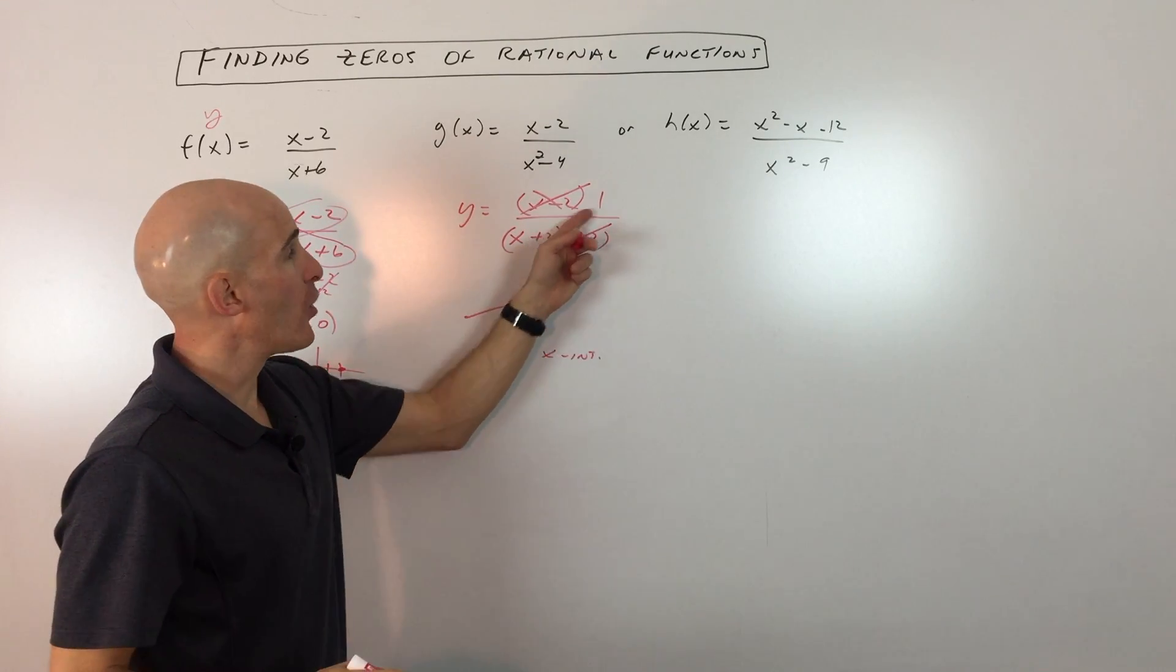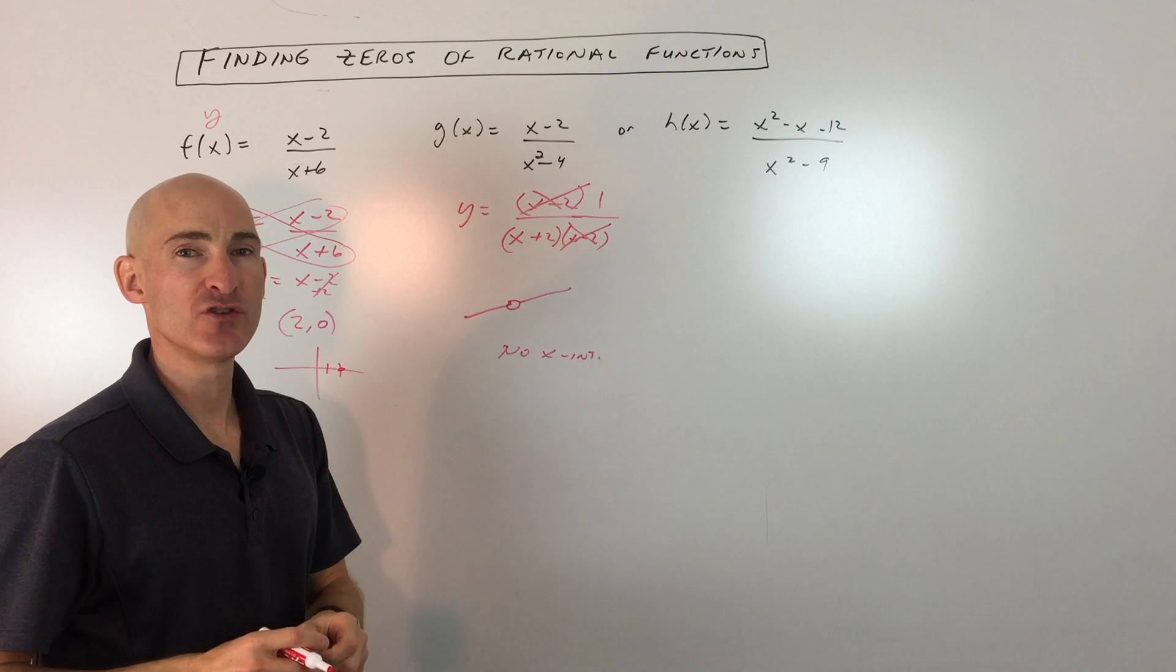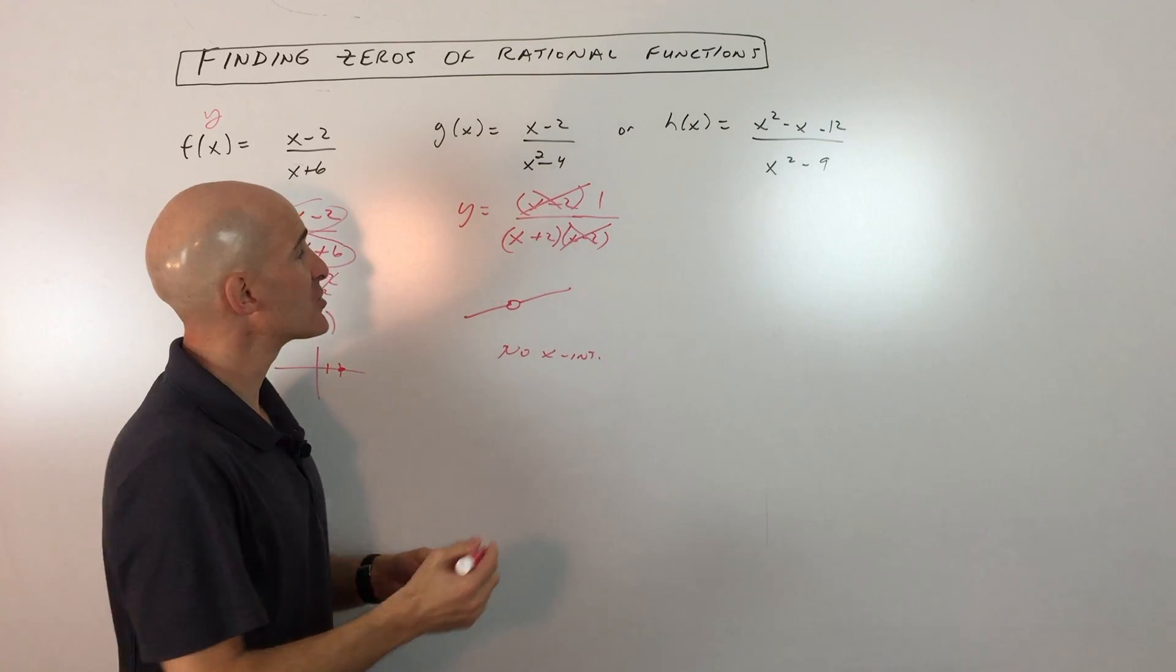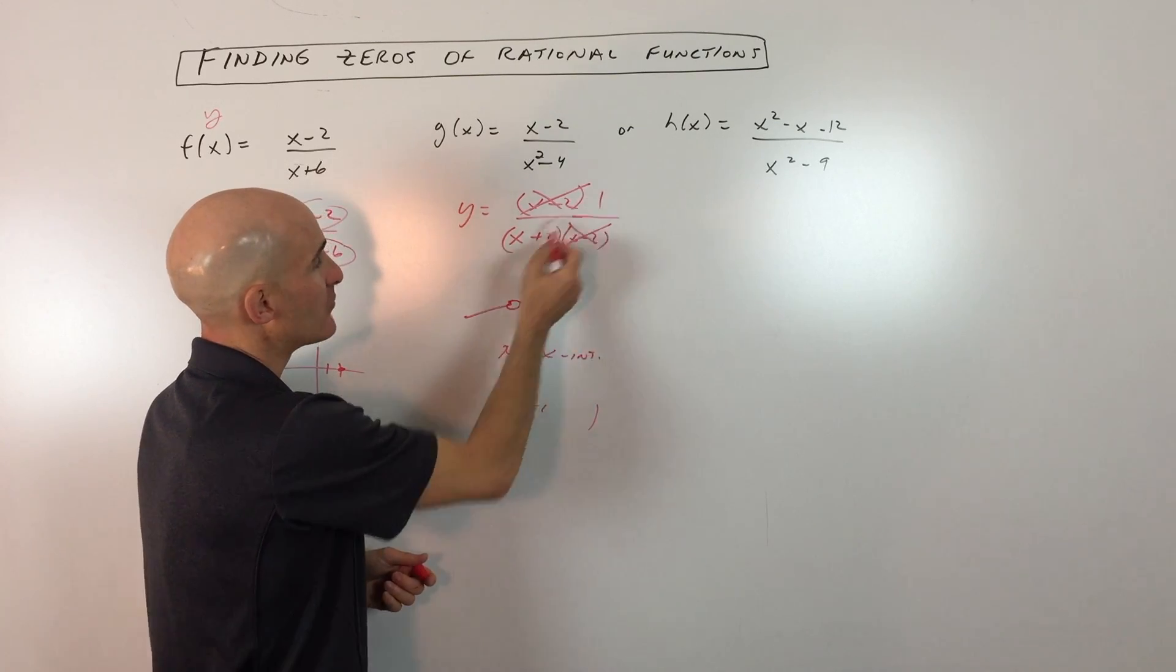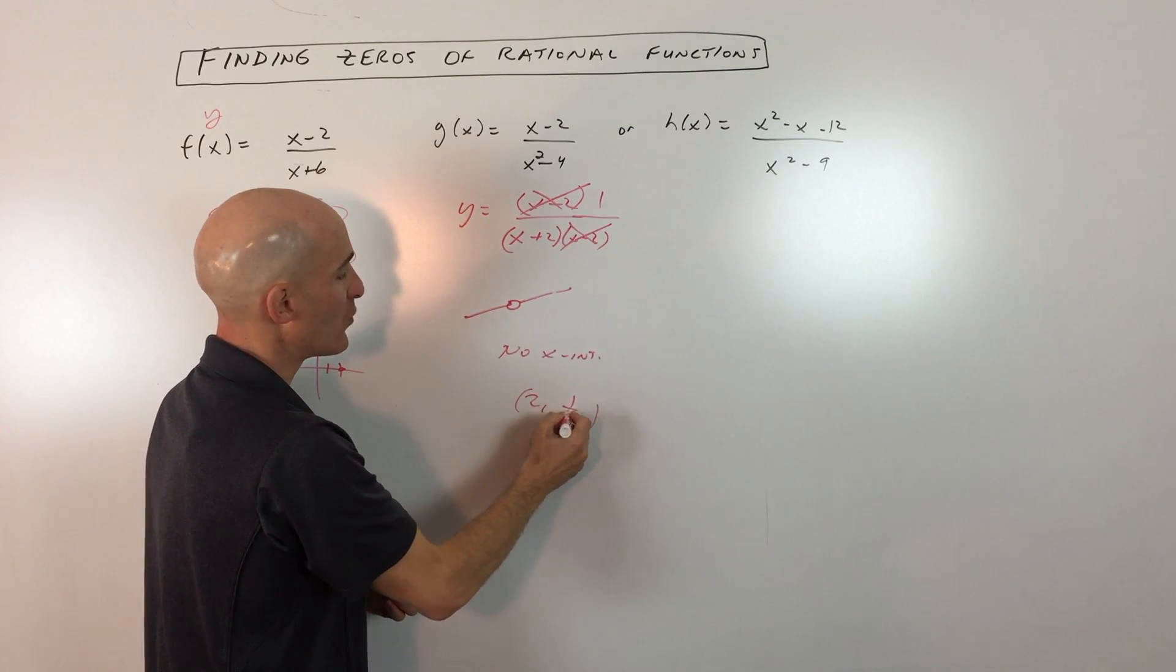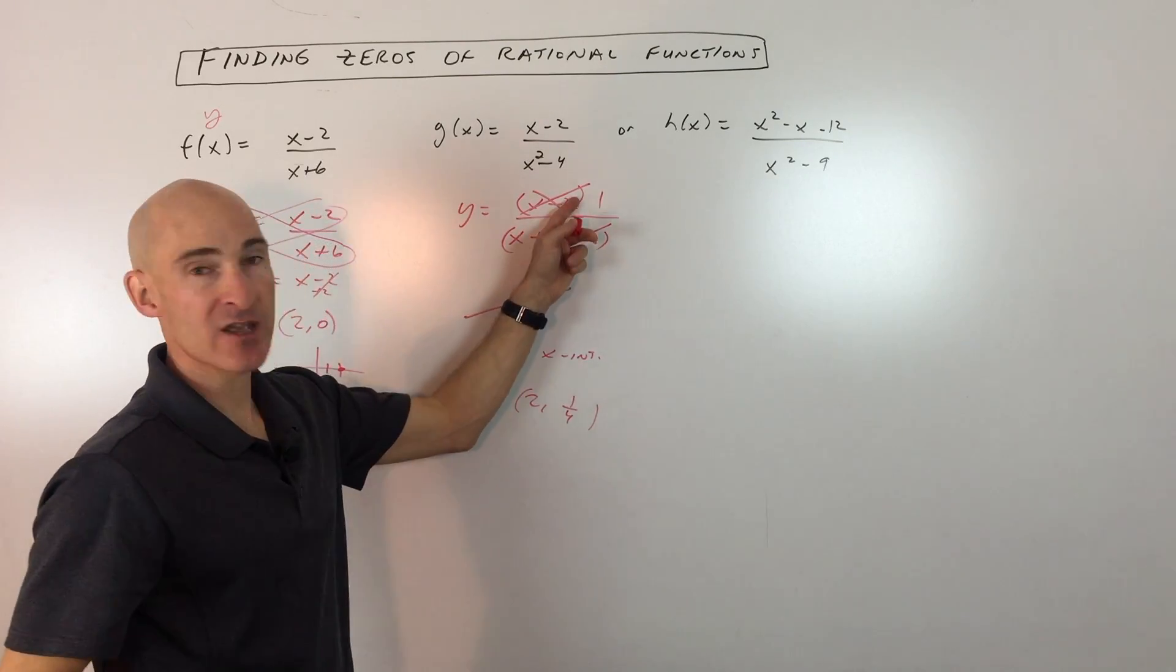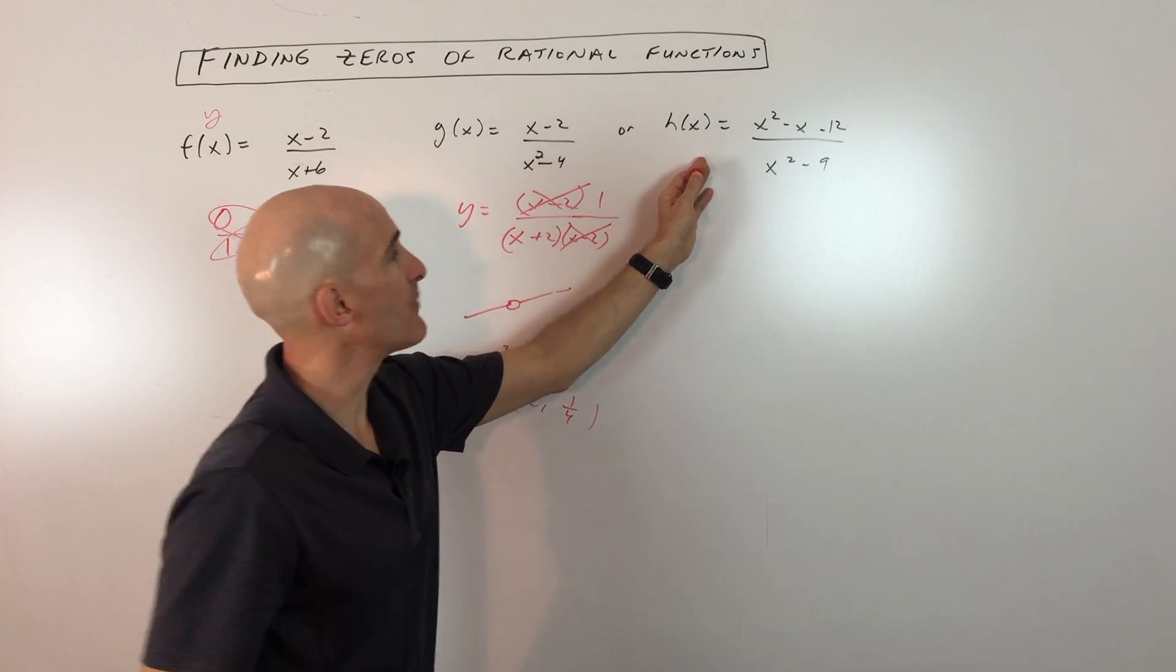There's going to be a hole, and I talked about that in another video on graphing rational functions. The way you would locate the hole is at 2 comma—if you put 2 into what's left over here, that's 1 fourth. But in this case, we're just talking about zeros, so let's look at the third example.